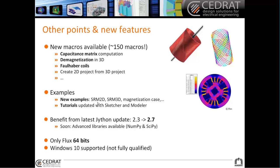We also added some examples, including SRM2D — the synchronous reluctance machine — inside the supervisor, a magnetization case, and more. We also updated all the tutorials using the sketcher and the modeler, so that you can learn how to do all these examples with the latest geometry tools. You will also benefit from the latest JITEM update, which means that very soon you will have NumPy and SciPy available as libraries for JITEM users. Also, we now have only Flux 64-bit, and we also support Windows 10.